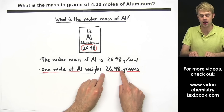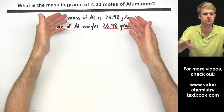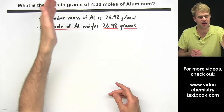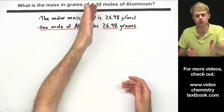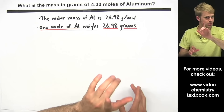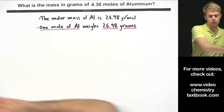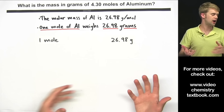Now that we have this information, I want to show you how we can solve this problem by just thinking through it. We're looking for the mass in grams of 4.3 moles of aluminum — basically, what do 4.3 moles of aluminum weigh? This is essentially a multiplication problem. If we had one mole of aluminum, it would weigh 26.98 grams.